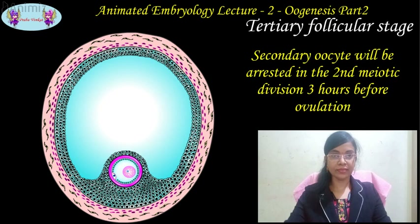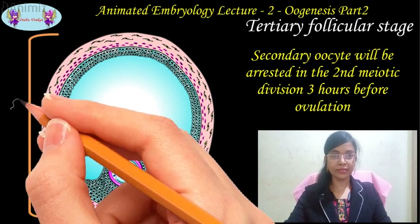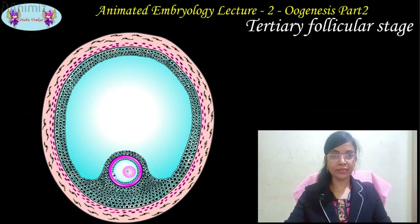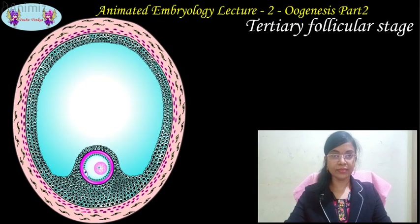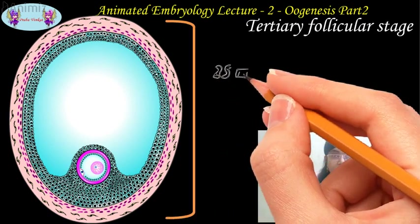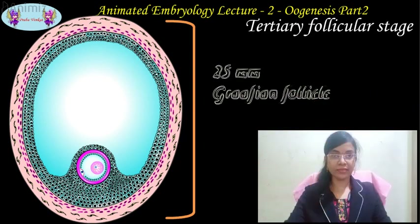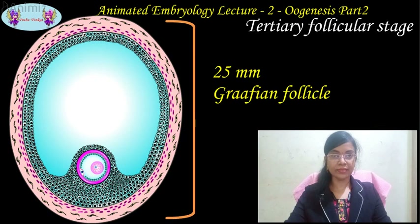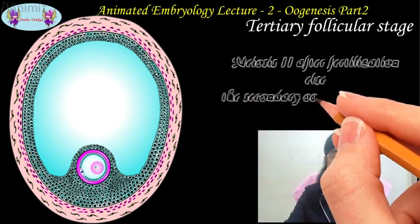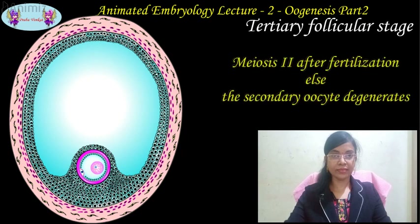Three hours before ovulation, the early tertiary follicle is around 5 mm in diameter. In the late tertiary follicular stage, most of the follicles become atretic except one that attains full maturity by increase in the size of the antrum. That large tertiary follicle is around 25 mm in diameter and is now called the Graafian follicle. On screen, you can see a very large Graafian follicle with around 25 mm or more in diameter. Meiosis 2 will be completed only if the oocyte is fertilized; otherwise, the secondary oocyte degenerates around 24 hours after ovulation.